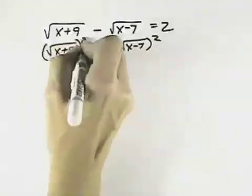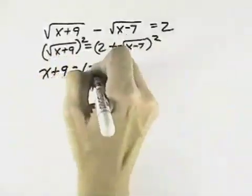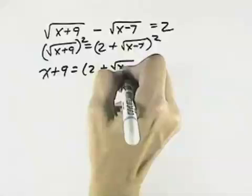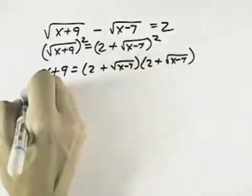Now when I square both sides, I've eliminated one of my radicals so that I have just x plus 9 on the left. But when I multiply out the right, which is 2 plus the square root of x minus 7 times 2 plus the square root of x minus 7, I'm still going to have a radical left.